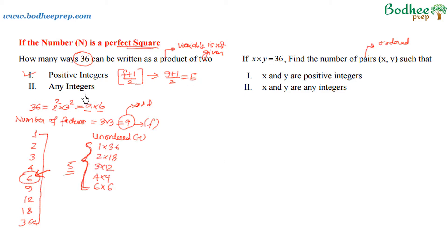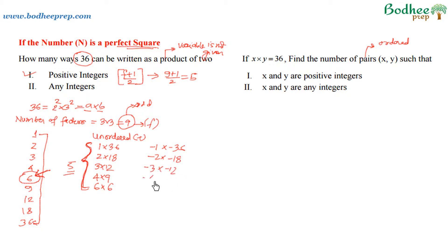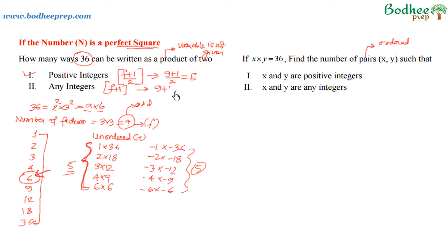Now for the second part — any integers, variable not given, so unordered pairs. The five positive unordered pairs are matched by five corresponding negative pairs: −1 × −36, −2 × −18, −3 × −12, −4 × −9, and −6 × −6. So 5 + 5 = 10. The shortcut formula for this case is f + 1; with f = 9, the answer is 9 + 1 = 10.